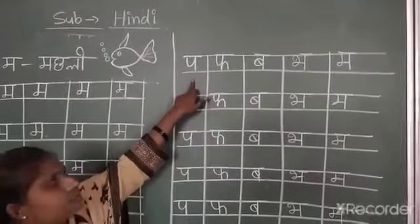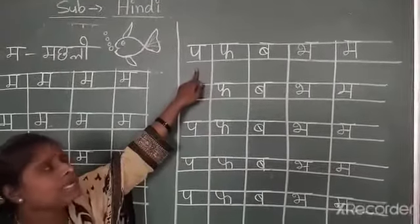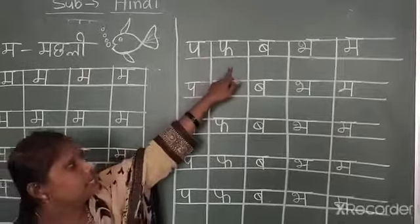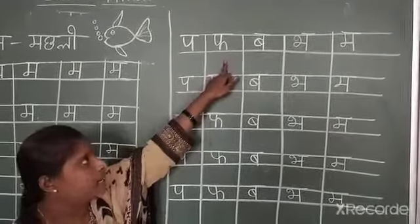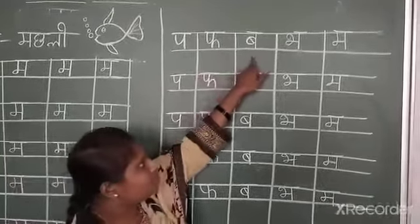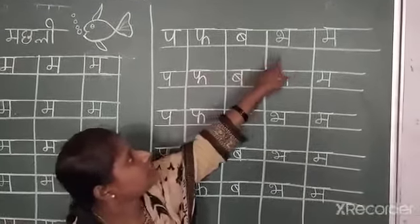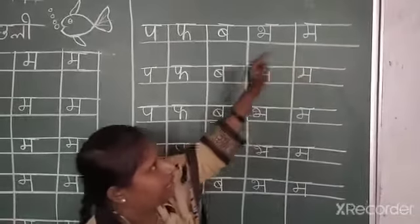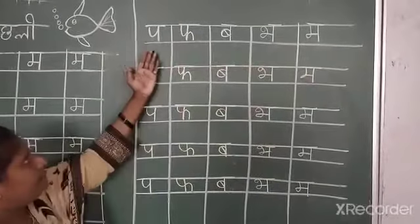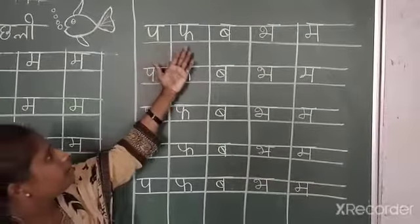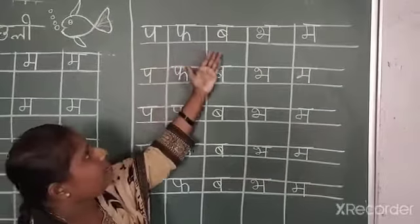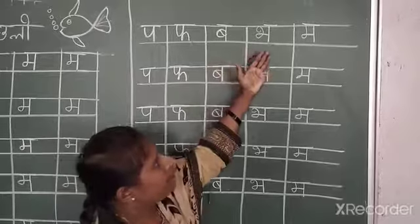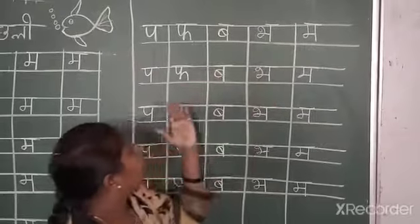See, what is this, children? This is small pho, this is big pho, this is small pho, this is big pho, and this one is Ma. Okay, ready? Pho, pho, bh, bh, ma.